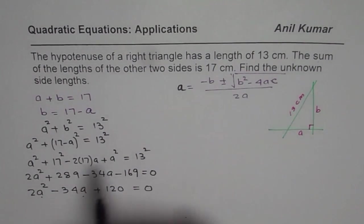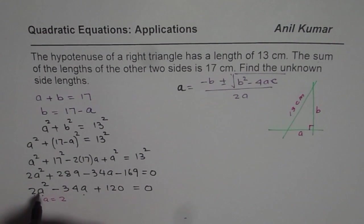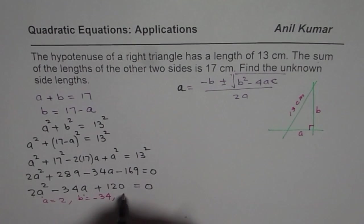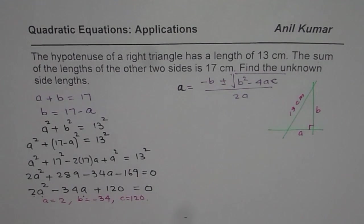Let me write down what those ABCs are. So from the equation, A is equals to 2, the coefficient of A² in this case, B is equals to minus 34, and C is equals to 120. So we will substitute these values and then calculate the value of A.